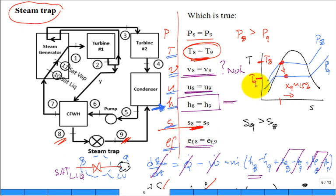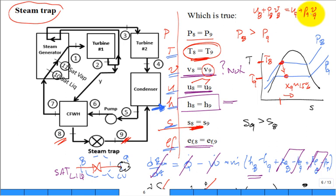Specific volume at state 9 is larger — the fluid expands and takes more room. For internal energy: from H = U + PV, since H8 = H9, we have U8 + P8V8 = U9 + P9V9. Because the specific volume at 9 is so much larger, U9 is going to be lower. The priority properties for the steam trap are: pressure (P8 > P9), temperature (T8 > T9), enthalpy (H8 = H9), and entropy (S9 > S8).